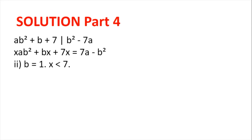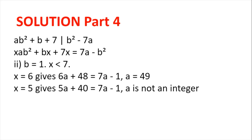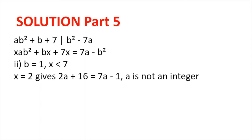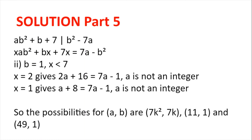For b = 1: x must be less than 7, so we have 6 options. x = 6 gives 6a + 48 = 7a − 1, so a = 49. x = 5 gives a not an integer. x = 4 gives a = 11. x = 3 gives a not an integer. x = 2 gives a not an integer. x = 1 also gives a not an integer. Checking a = 11, b = 1 and a = 49, b = 1, both are valid. So the complete set of solutions is (a, b) = (7k², 7k), (11, 1), and (49, 1).